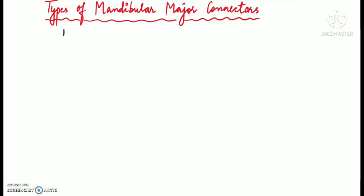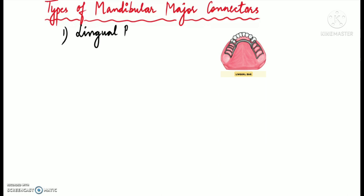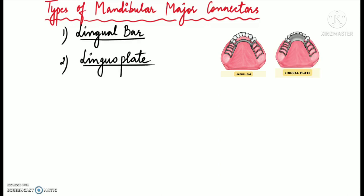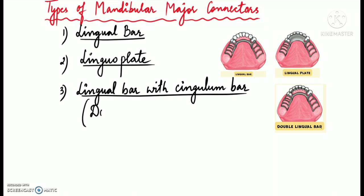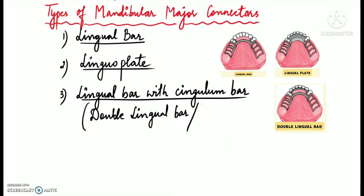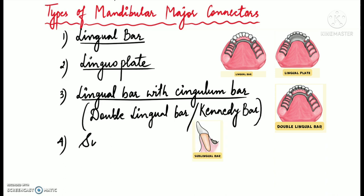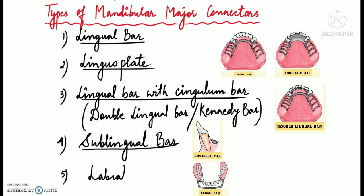There are five types of mandibular major connectors which will be discussed in further videos: the lingual bar, the lingual plate, the lingual bar with cingulum bar (also known as the double lingual bar or Kennedy's bar), the sublingual bar, and finally the labial bar. All of these types will be covered in detail in upcoming videos.